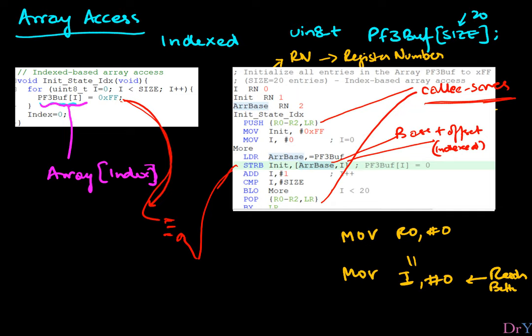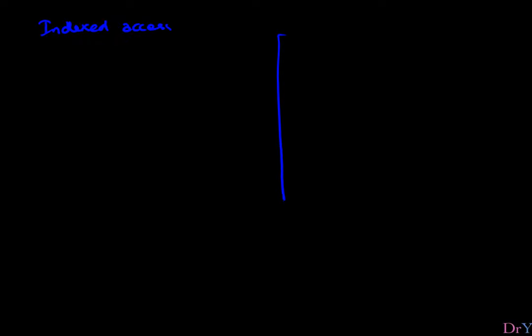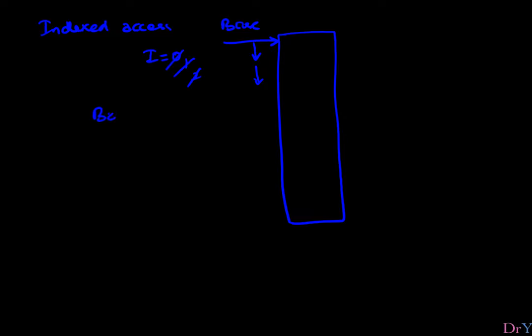Let's summarize how index-based access works. Our array is tethered to a fixed base address. We navigate one step at a time by incrementing I from 0 to 1 to 2 and so on, while the base stays constant. In assembly, we use the base plus offset addressing mode to access each element — that's the core idea of indexed array access.